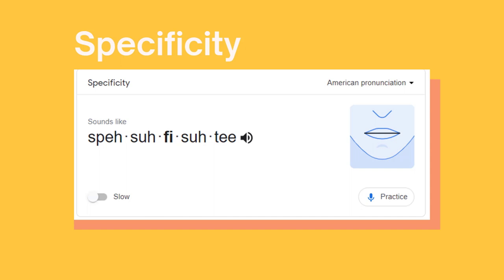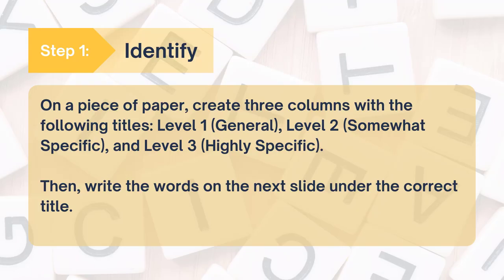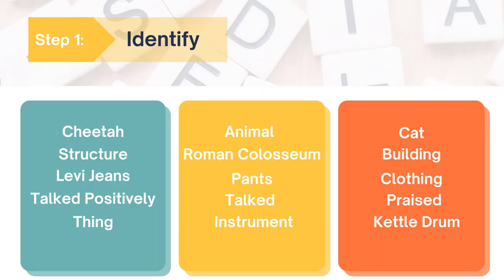The word I'm using here is specificity, and here you can see a pronunciation of this. In step one, we want to practice the following: write down level one, level two, and level three on a piece of paper and create separate columns for those. Then take these words here and write them under the correct column.